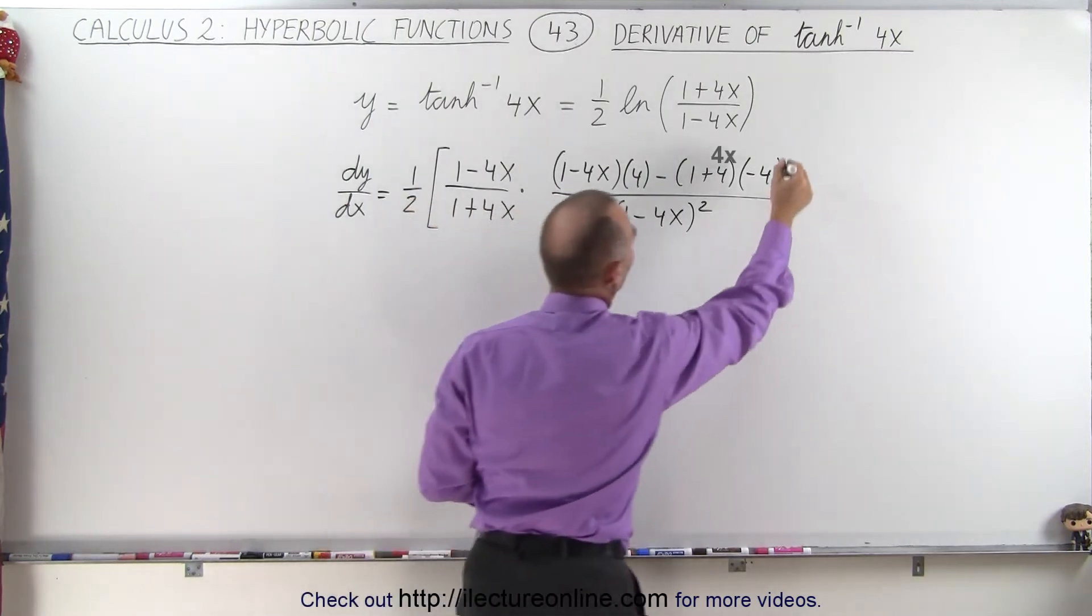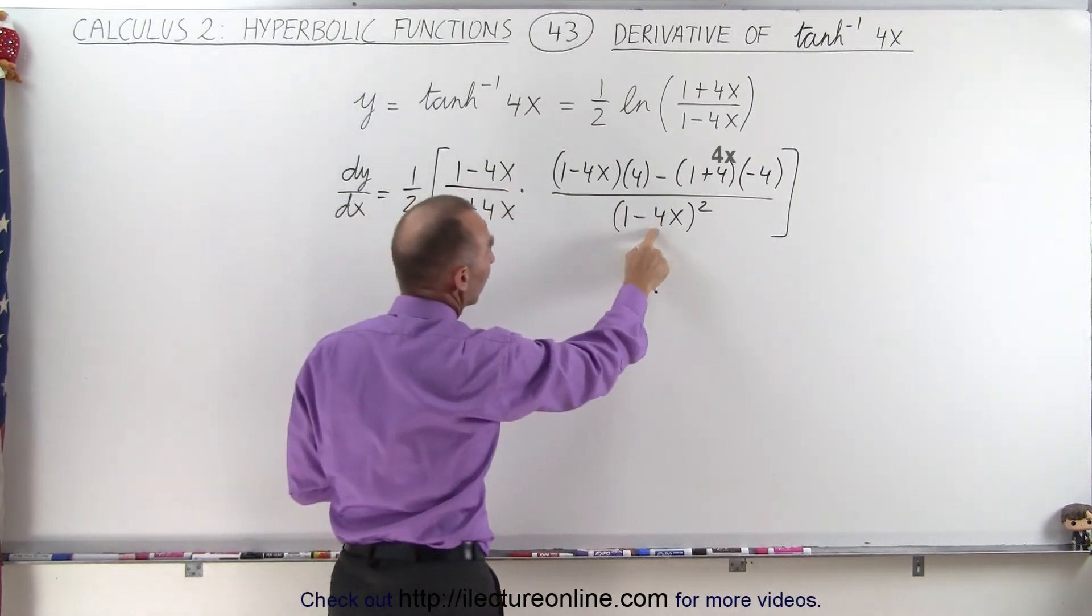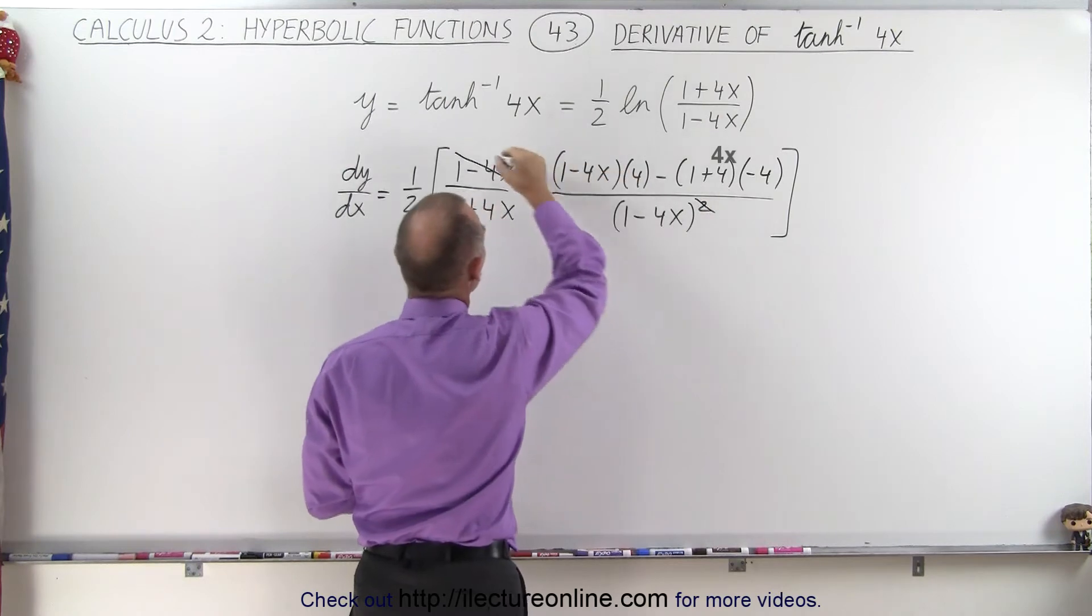Let me close the bracket here. And then you see that we have a 1 minus 4x over there, and a 1 minus 4x squared over there. So this cancels out one of those. This becomes 1.